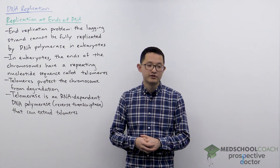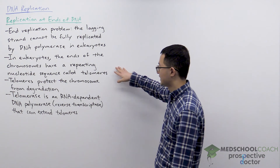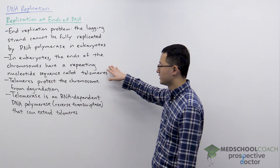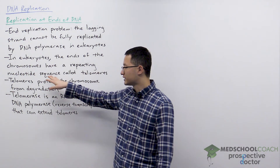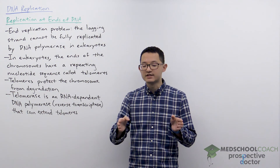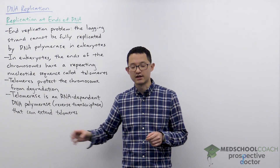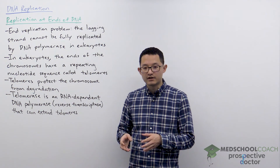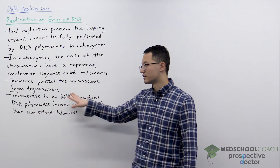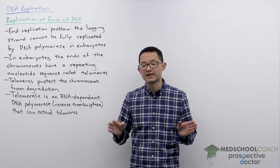Eukaryotes do have a method of dealing with this. At the ends of chromosomes, eukaryotes have a repeating nucleotide sequence called telomeres. Essentially, at the ends, you have this repeating sequence of nucleotides. These telomeres do not code for any protein products, but they are important because they protect the chromosome from degradation at the ends.